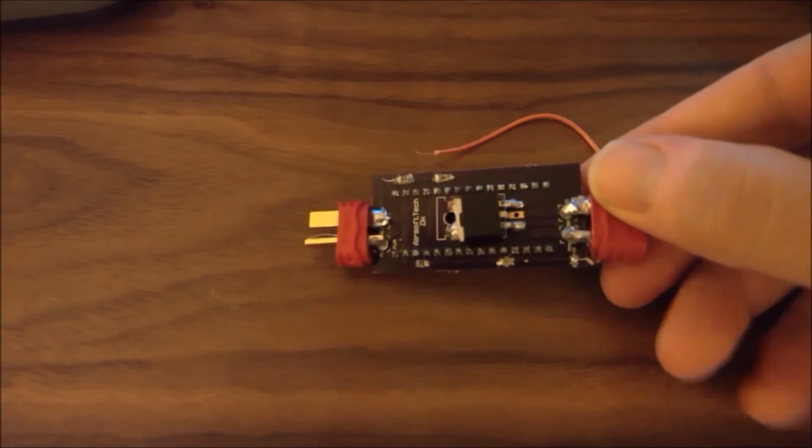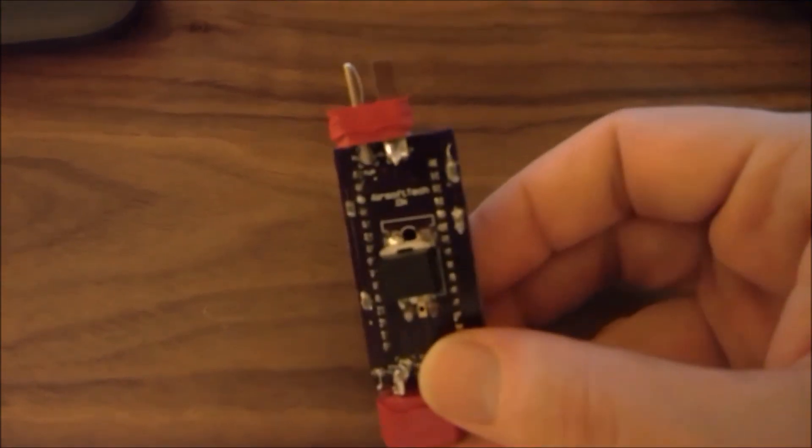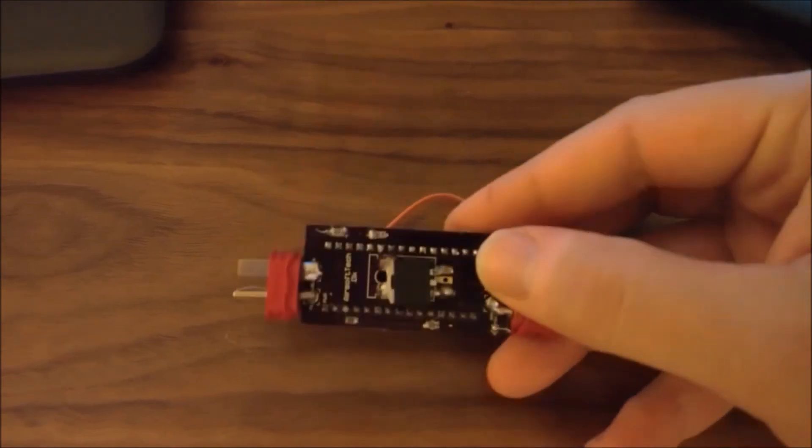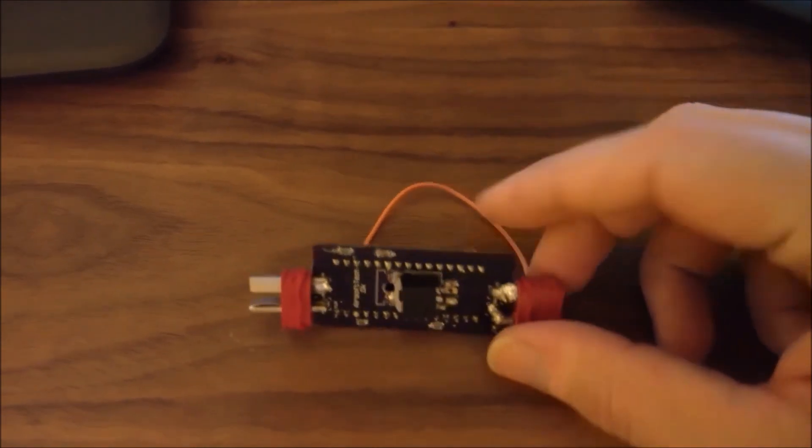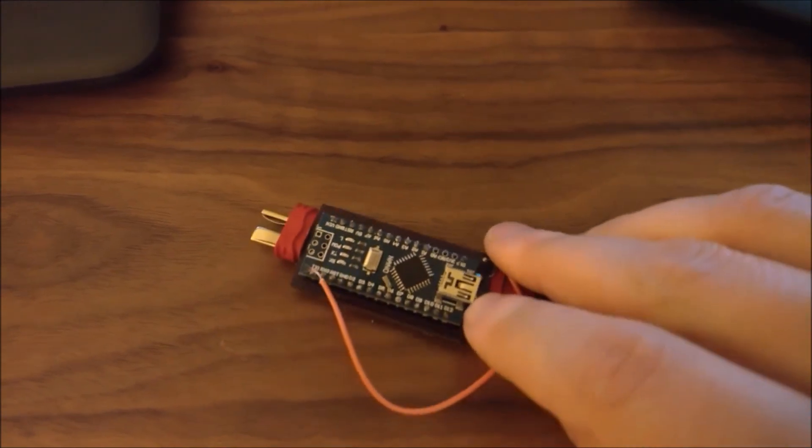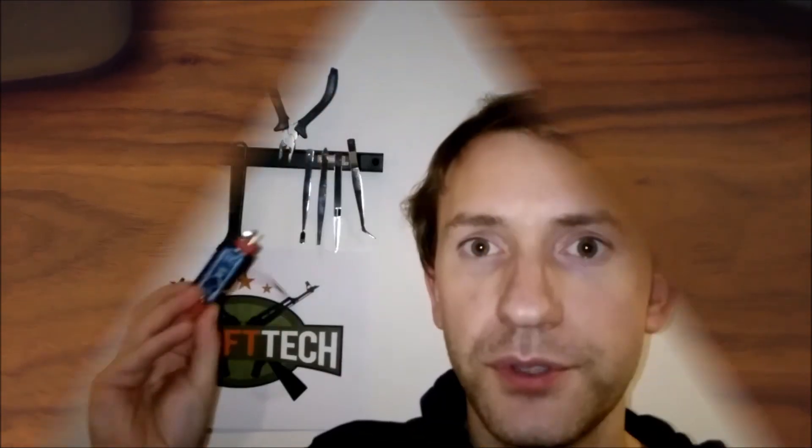Here you see the final result with the MOSFET on one side, motor connector and trigger wire on one end, battery connector on the other end and the Arduino on the other side. So now we have the complete finished burst mode MOSFET based on the Arduino Nano.